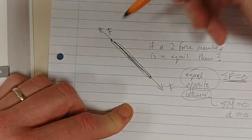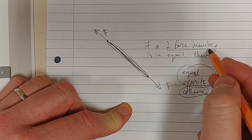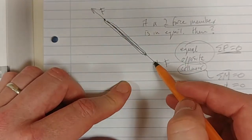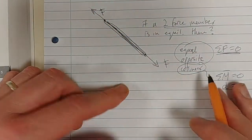So these two forces, for a two-force member, to be in equilibrium means that the forces are equal, opposite, and they are collinear. They're passing through the same line of action.